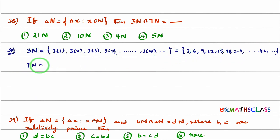What is 7N? 7N contains elements in the form of 7x, where x is a natural number. So the set will be like this: 7 into 1, 7 into 2, 7 into 3. Like that, this type of elements will be there in 7N. All these elements are multiples of 7. If we simplify this, 7 into 1 is 7.